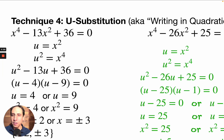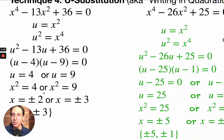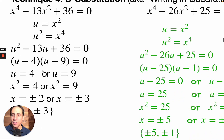Now we've got u squared minus 13u plus 36. What two numbers multiply up to 36 and also add up to minus 13? That would be minus 4 and minus 9. So splitting the middle gives us u equals 4 or u equals 9.